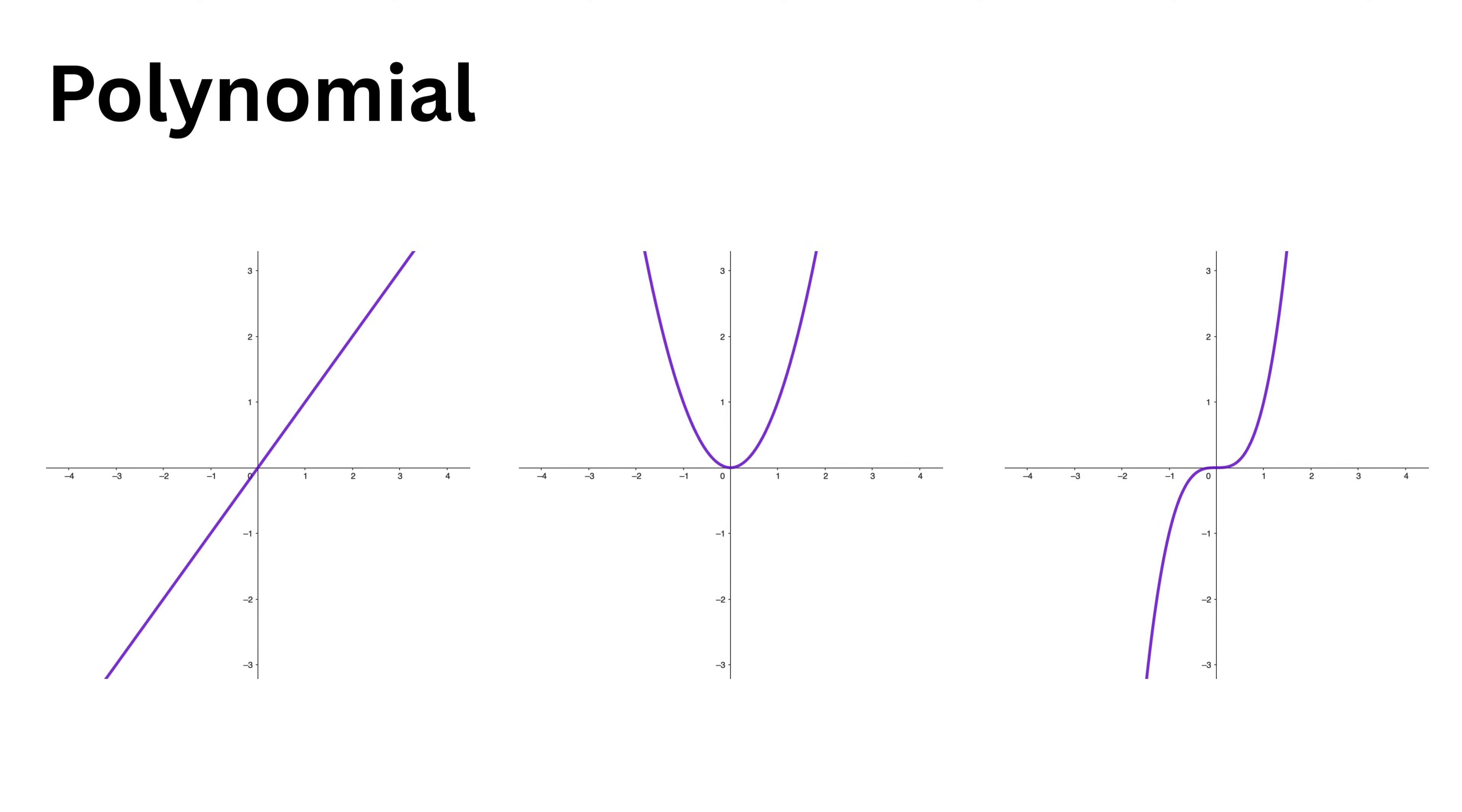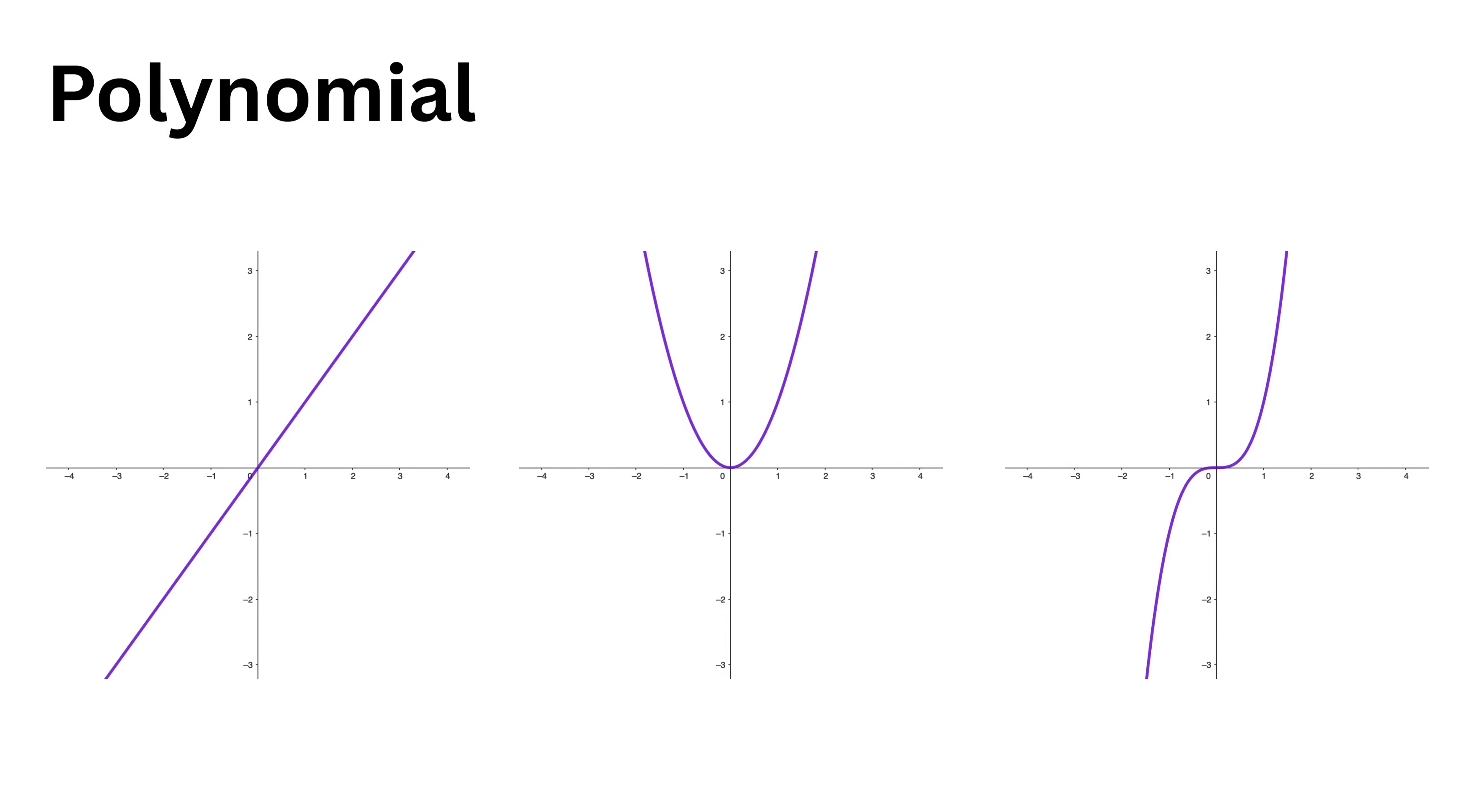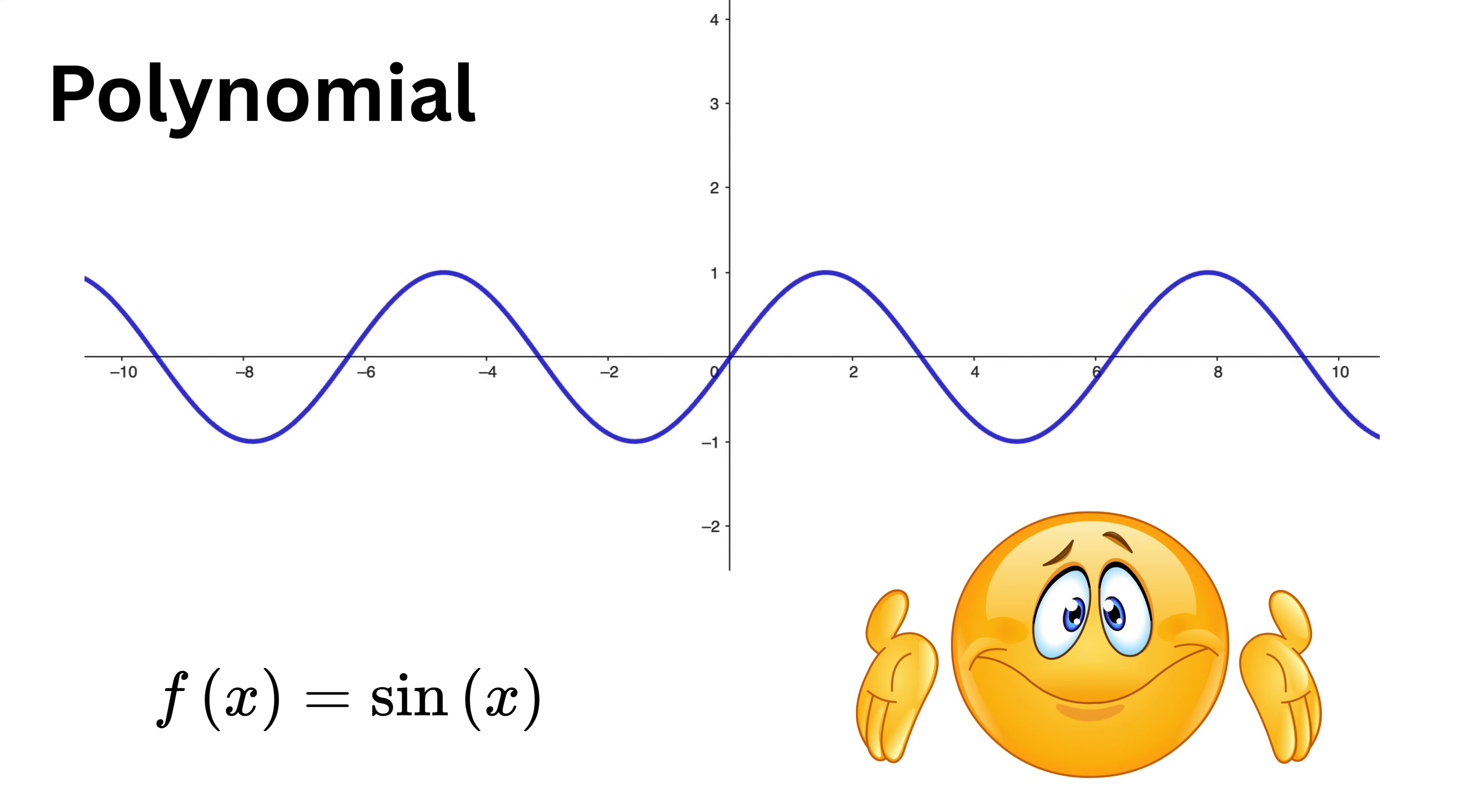Now here's the big question: can we somehow use these polynomials like x, x³, x to the power 5 and so on to represent sin(x)? At first it might sound strange—how can these simple shapes combine to create that smooth wavy never-ending pattern of sin(x)?